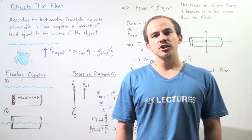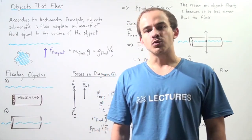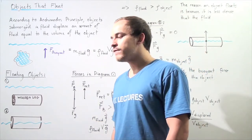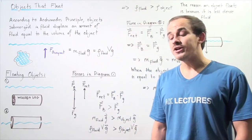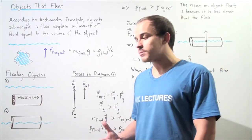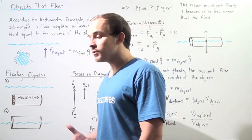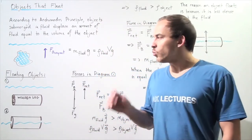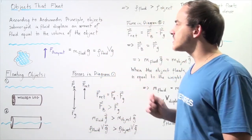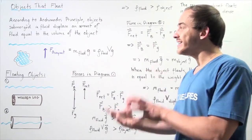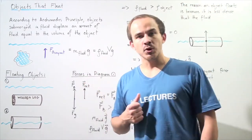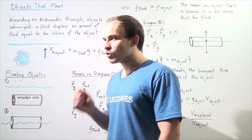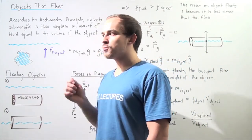In an earlier lecture, we alluded to the fact that there is a relationship between Archimedes' Principle and floating objects. In other words, we can use Archimedes' Principle to describe or explain exactly why objects float. That's exactly what we're going to explore in this lecture — we're going to find the link between Archimedes' Principle and floating objects. Let's begin by recalling what Archimedes' Principle is.